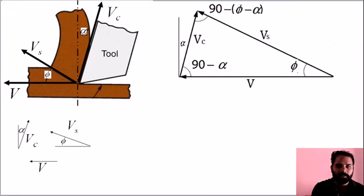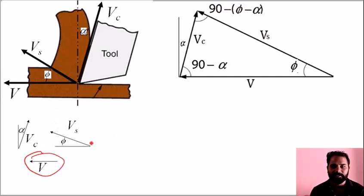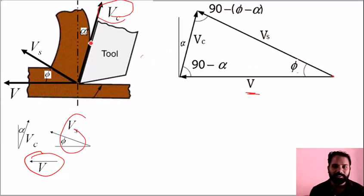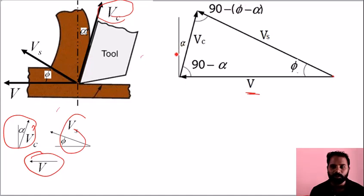The chip with respect to the tool is also part of the velocity system. In the velocity triangle, we draw a triangle. The cutting velocity V is horizontal. The shear velocity Vs is at an angle phi from the horizontal — it points in the direction of the shear angle. The chip velocity Vc is placed at angle alpha from the vertical. This forms a closed triangle.